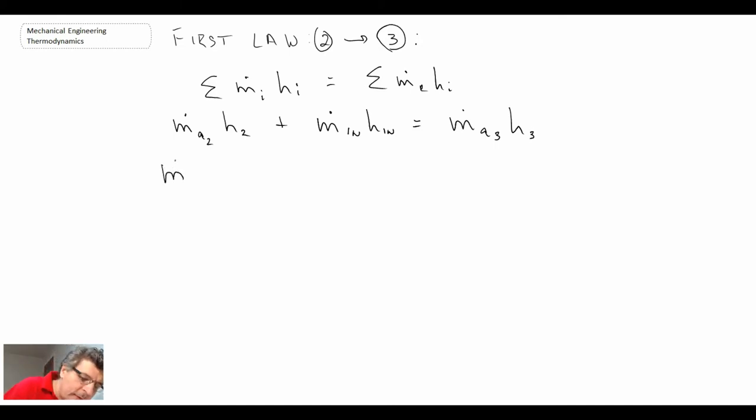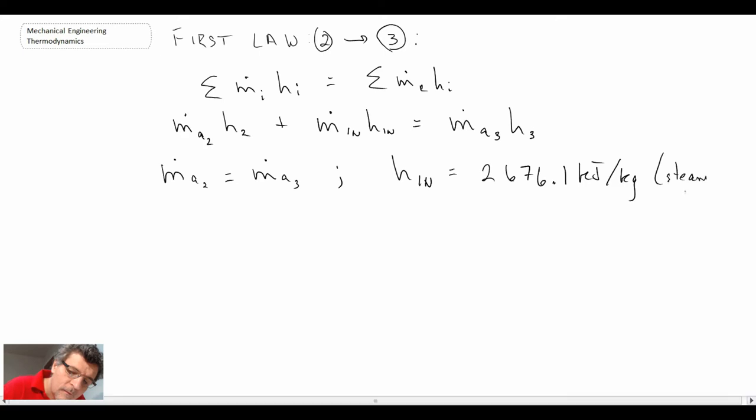Now we know the mass flow rate of air at 2 equals the mass flow rate of air at 3. And we can determine the enthalpy of the inlet stream. We're told it's 100 degrees C saturated vapor, so we can go to the steam tables.